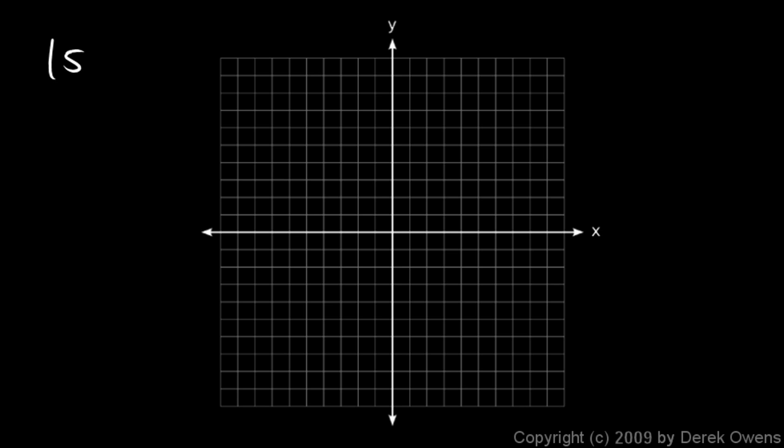In the first example on this page we're told to plot the point 5, 1. So 5, 1 is the point, and this is an ordered pair, so we know that 5 is our x value and 1 is the y value. It's always x first and then y.